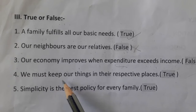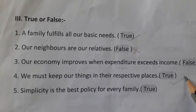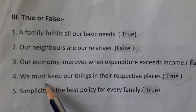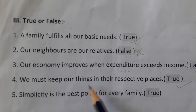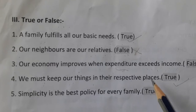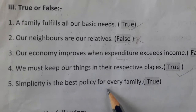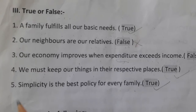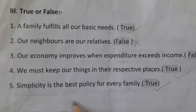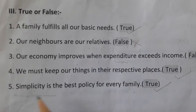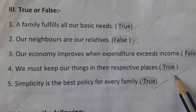Fourth one: we must keep our things in their respective places. Fifth one: simplicity is the best policy for every family — the sentence is true. Because if we are simple, our economy level will improve, as we don't spend on unwanted things. So simplicity is very important and simplicity is the best policy for every family. That is true.